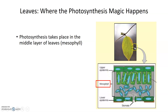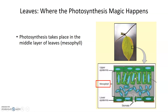If you took a leaf, sliced it in half, and then turned it to face you in a cross section, this is what you would see. You would see a layer of cells on the top called the upper epidermis, a layer on the bottom called the lower epidermis, and a whole middle section called the mesophyll, where these mesophyll cells are located.